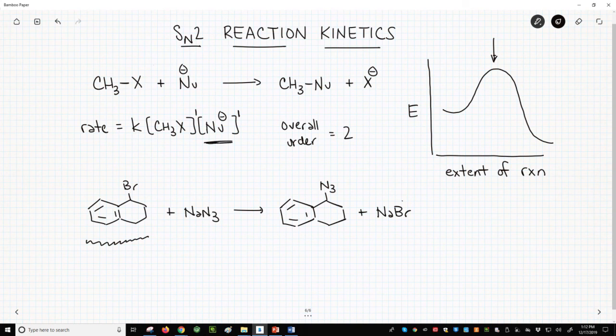So you might recommend adding more of the nucleophile. Doubling the amount of sodium azide, the nucleophile, should double the rate of the reaction. So the SN2 reaction is second order in the rate determining step. The rate of the reaction depends on both the concentration of the nucleophile and the alkyl halide.